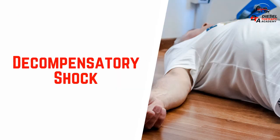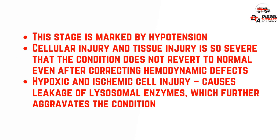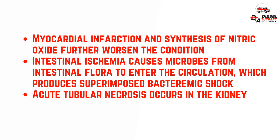Decompensatory shock. This stage is marked by hypotension. Cellular and tissue injury is so severe that the condition does not revert to normal even after correcting hemodynamic defects. Hypoxic and ischemic cell injury causes leakage of lysosomal enzymes, which further aggravates the condition. Myocardial infarction and synthesis of nitric oxide further worsen the condition. Intestinal ischemia causes microbes from intestinal flora to enter the circulation, which produces superimposed bacteremic shock. Acute tubular necrosis occurs in the kidney.